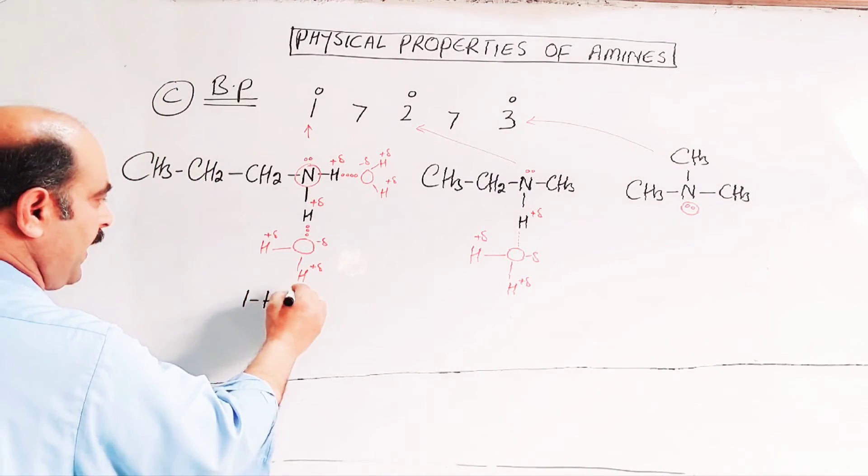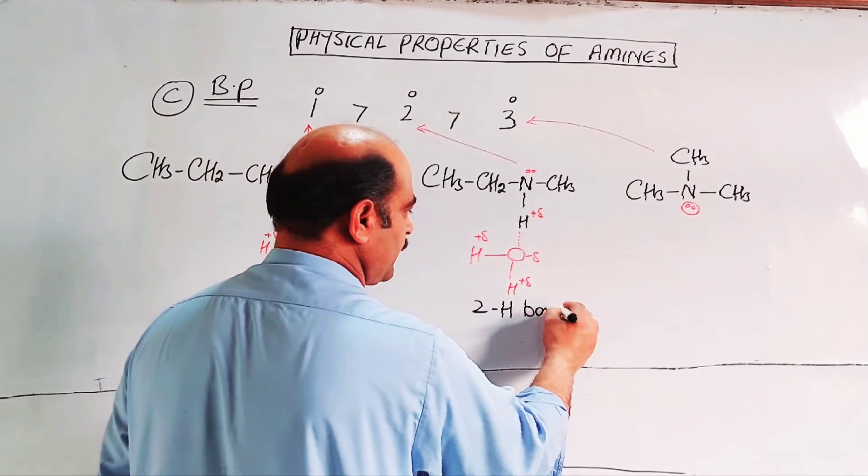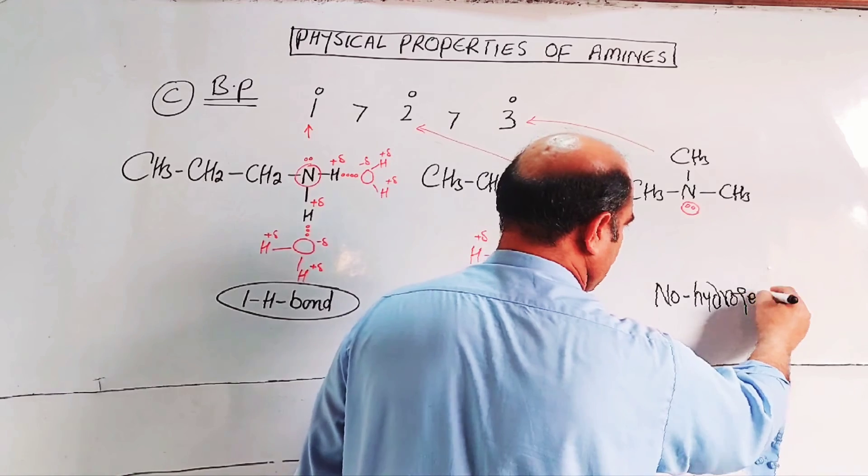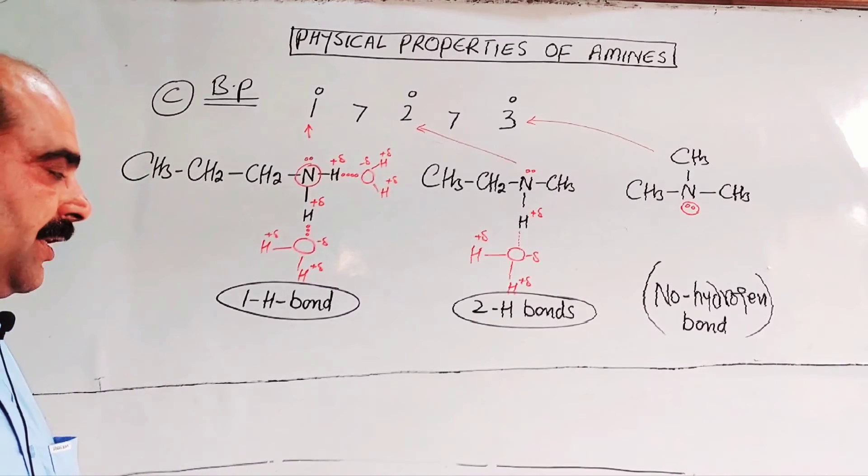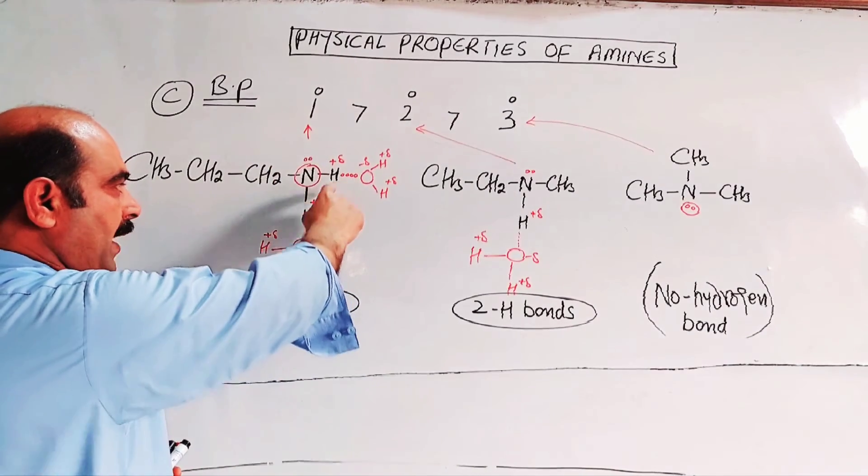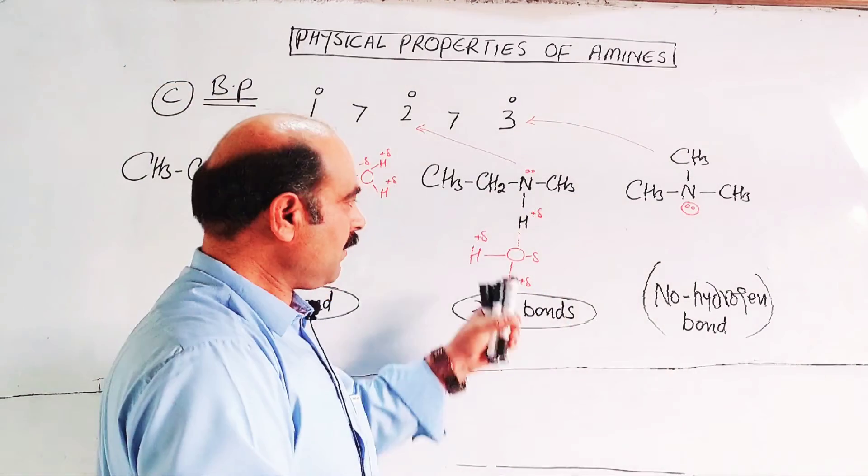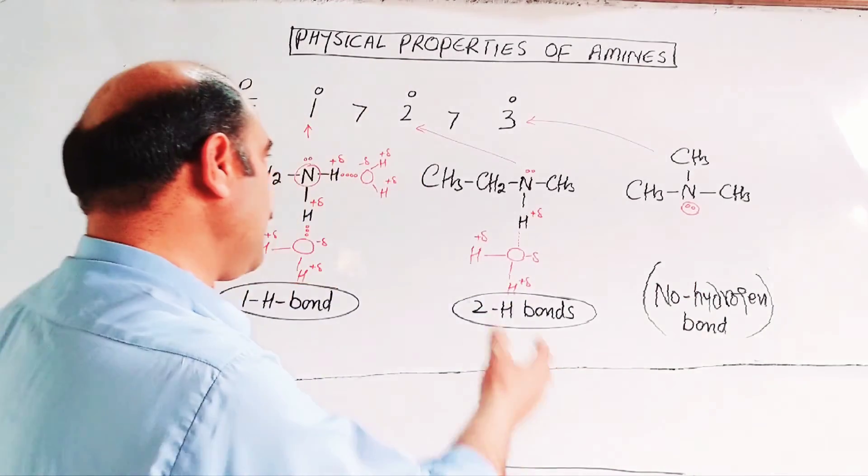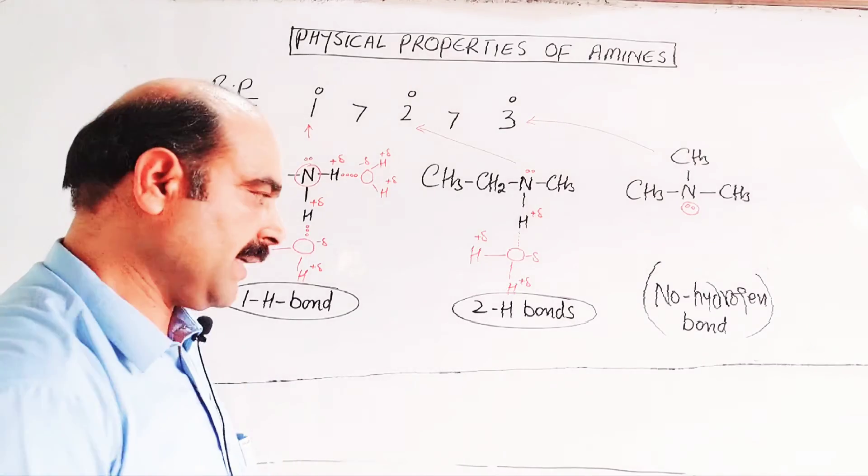One hydrogen bond here, H bond. Two hydrogen bonds here, 2 H bonds. And here, no hydrogen bond. Due to hydrogen bonding, extra attraction is created. Hydrogen bond is a strong type of intermolecular attractive force. That's why boiling point: two hydrogen bonds between primary amine molecules, one hydrogen bond between secondary amine molecules, no hydrogen bond in tertiary amines—very weak attractive forces. That's why primary amines have boiling point values higher than secondary amines, and these are higher than tertiary amines.